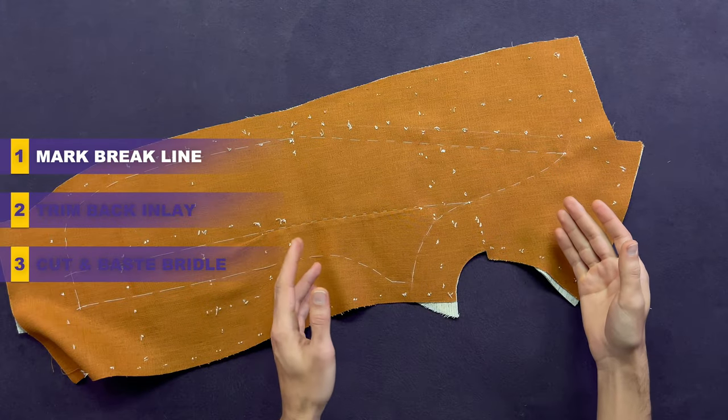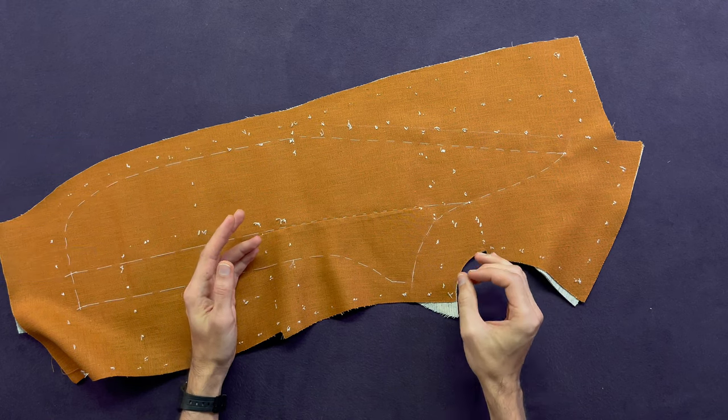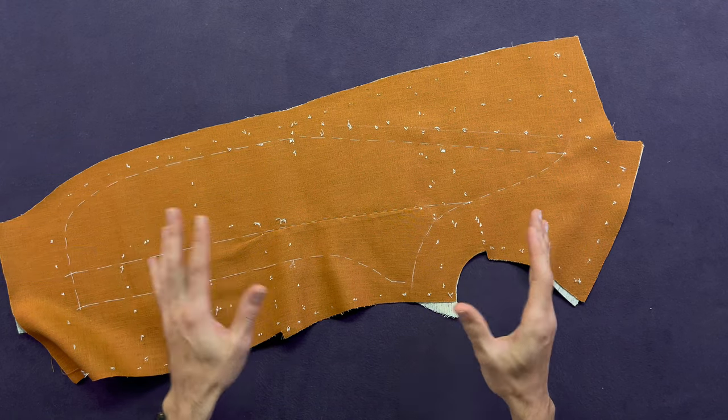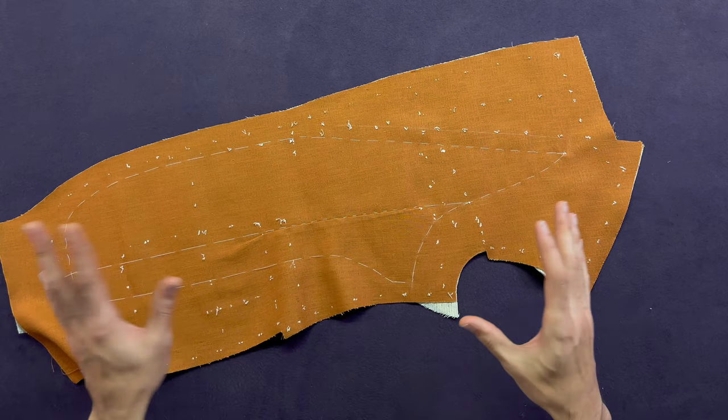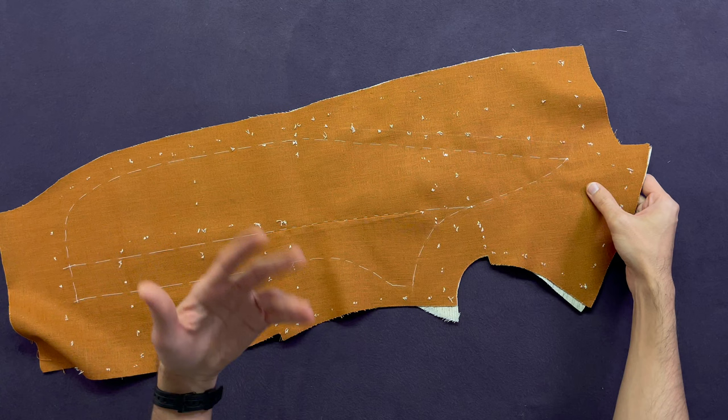Before we go ahead and mark the brake line and apply the bridle, we have to make sure that our forepart is pressed. Maybe you have put it somewhere and now you're getting back to it. Never work on a forepart that is crumpled up.